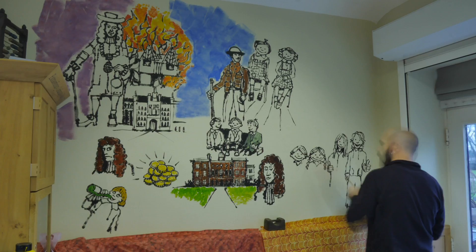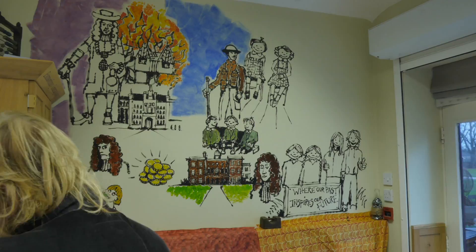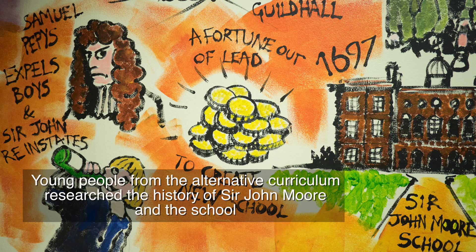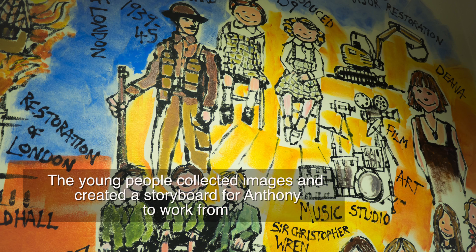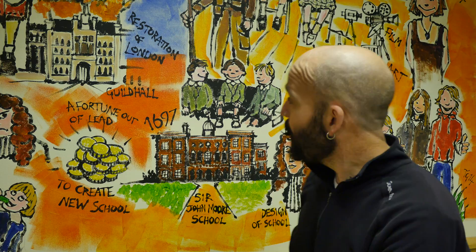We've got the kids to help create what we would call a speed mural — we've had to do it in one day. It's to encompass all of the history of St John Moore and all the events that happened to create this place, as well as the events leading up to today. The children have helped colour in as I've been outlining all the basic historical information.